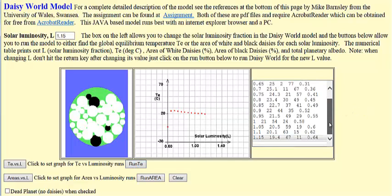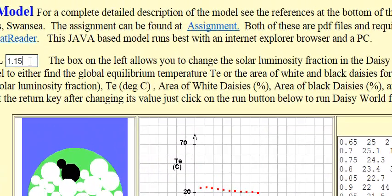1.15. Now the 1.15, it went down here. I have to show it. At 1.15 solar luminosity, we have a temperature of 19.4, white daisy area of 67, black daisy area of 11, and a total planetary albedo of 0.64.